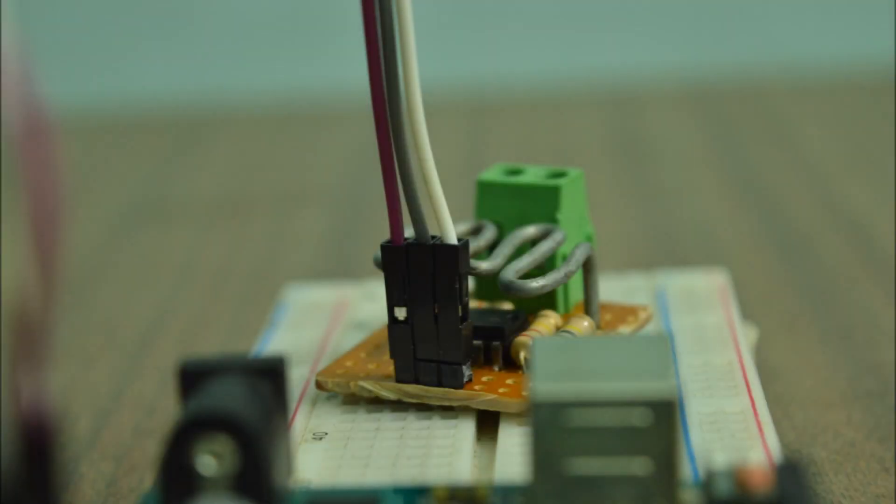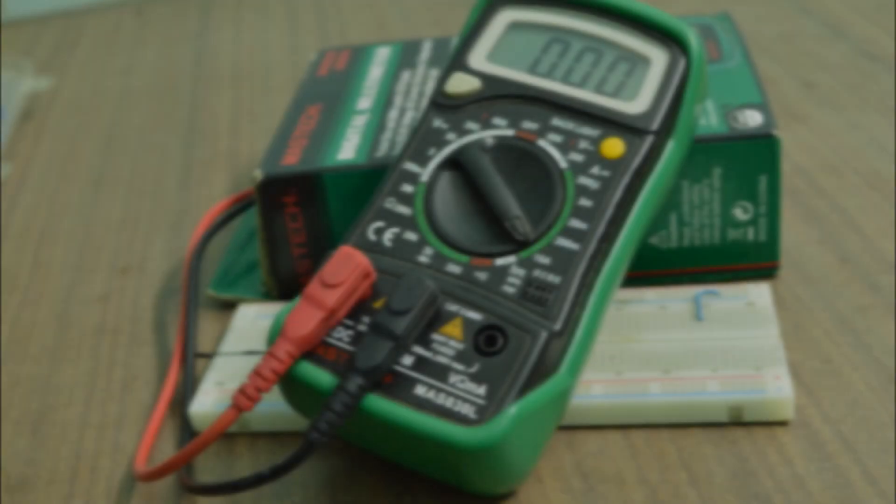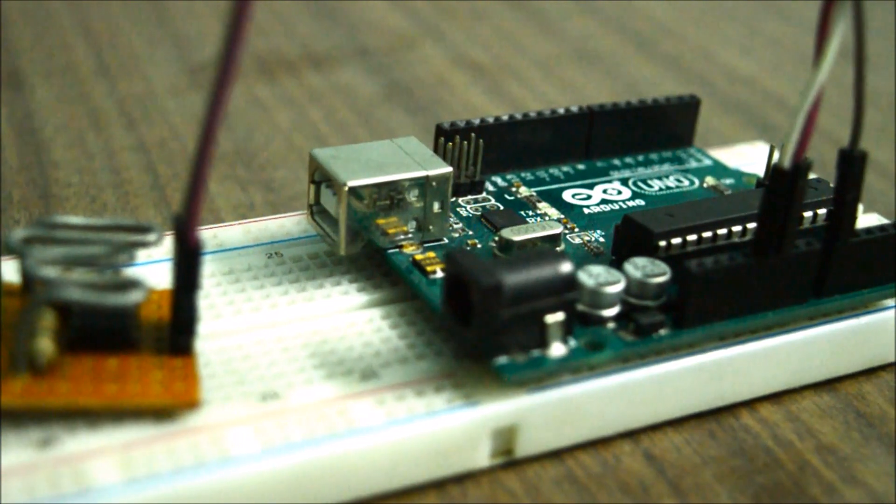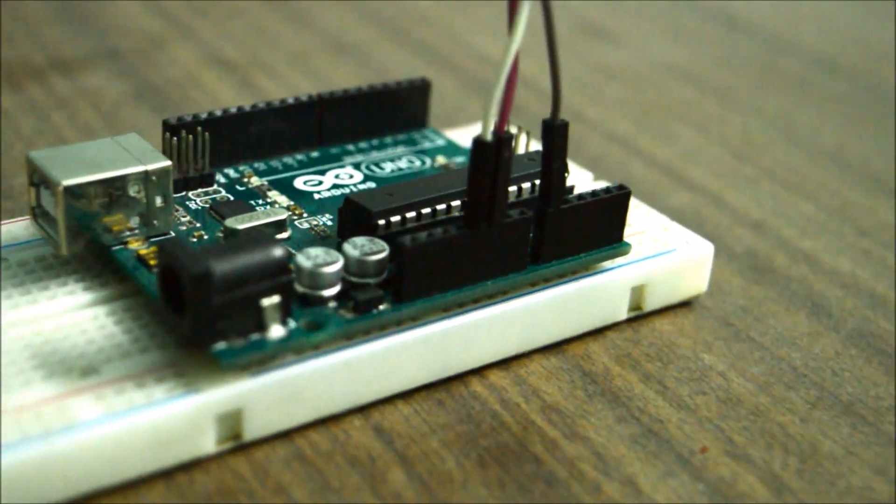Now it's time to measure some current using our current sensor module, but here's the tricky part. First we need to calibrate our current sensor so that it gives correct reading of the current that we are passing through the load. For that we'll be using a standard multimeter in the current mode that can give us the current value which is passing from the load.